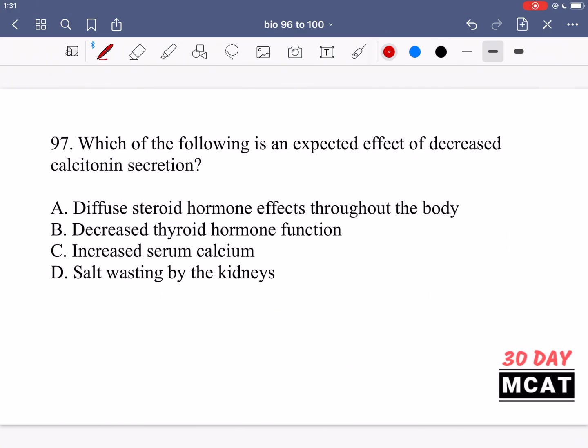In question 97 we're asked which of the following is an expected effect of decreased calcitonin secretion. So we have a decreased amount of calcitonin. What does calcitonin do? We have to know that before we can answer what happens when we don't have enough of it for homeostasis level.